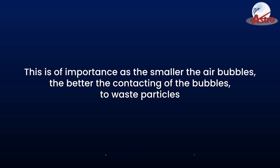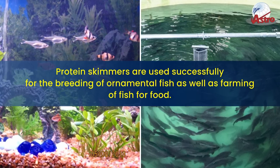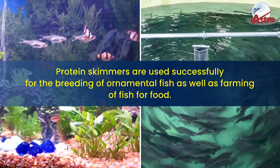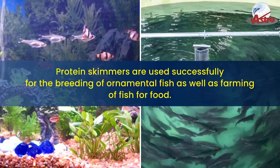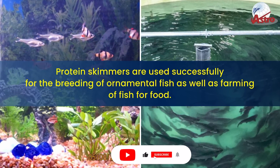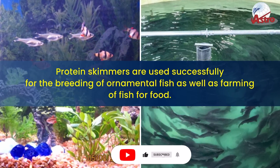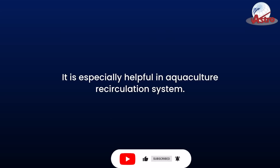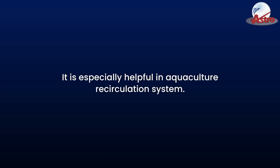Protein skimmers are used successfully for the breeding of ornamental fish as well as farming of fish for food. They are especially helpful in aquaculture recirculation systems.